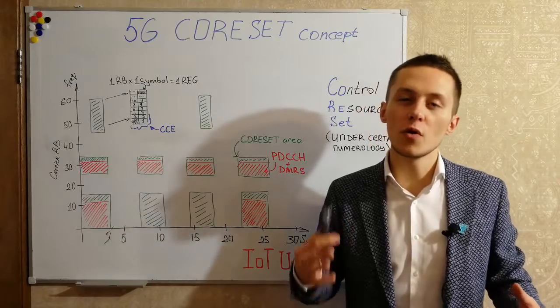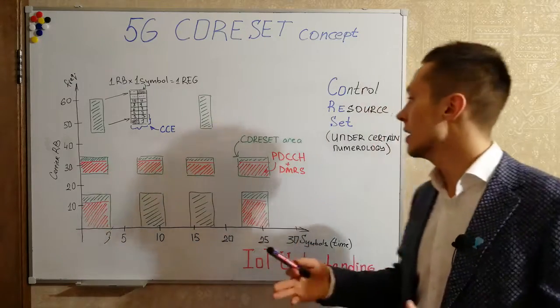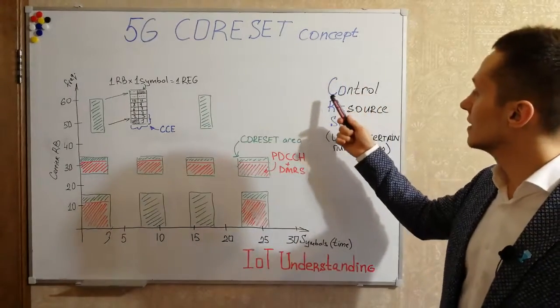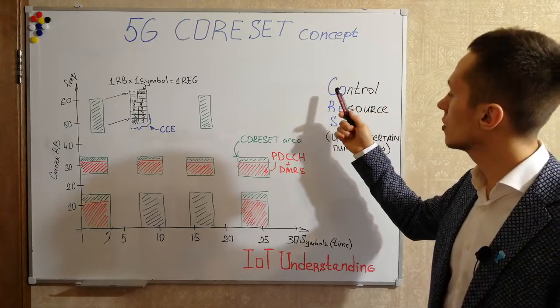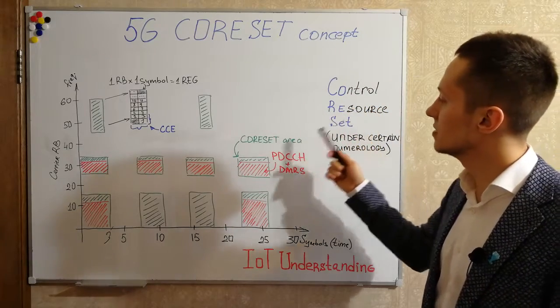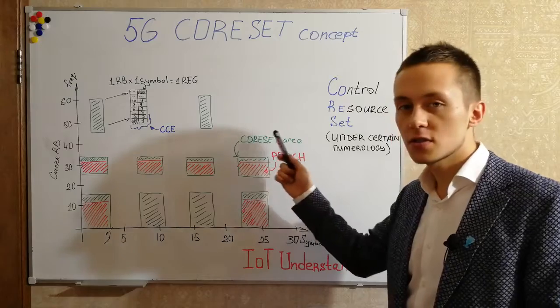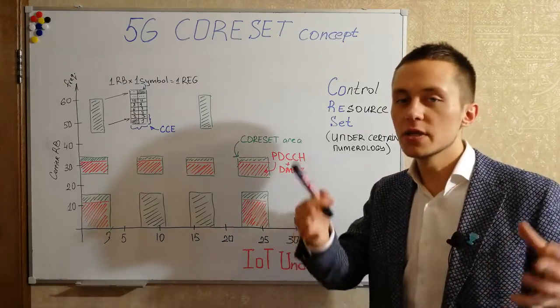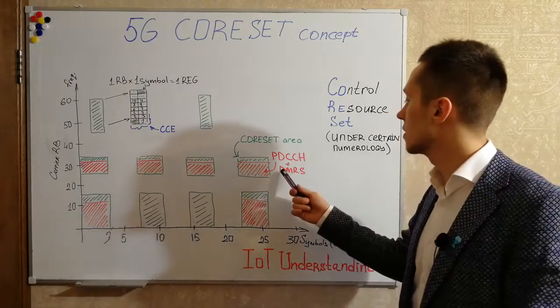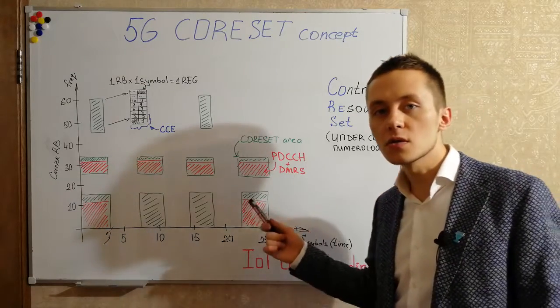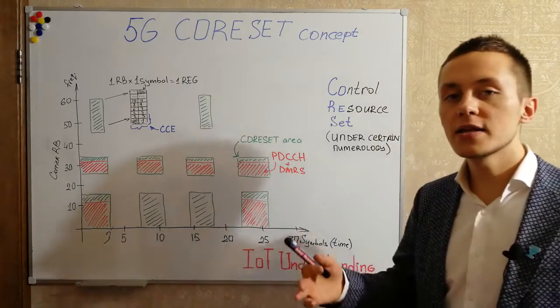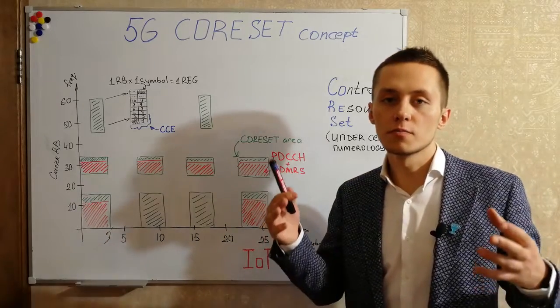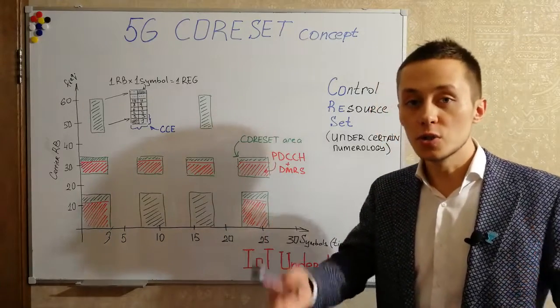5G is even more flexible than 4G and so we can have different control resource sets, different areas in which PDCCH with downlink control information with demodulation reference signals can be allocated for specific users.